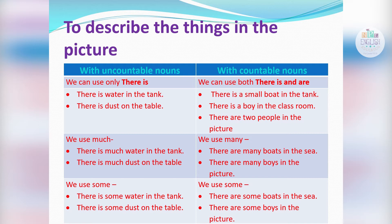With uncountable nouns, we use 'much': 'There is much water in the tank', 'There is much dust on the table'. But with countable nouns, we use 'many' instead of 'much'. For example: 'There are many boats in the sea', 'There are many boys in the picture.' We only use 'there is' with uncountable nouns, and we have to use 'a' with singular countable nouns.